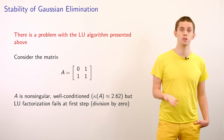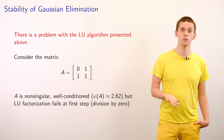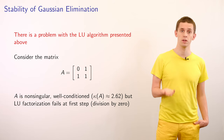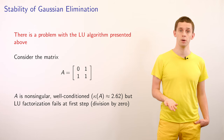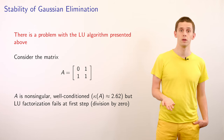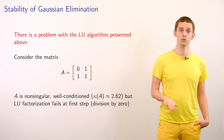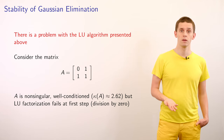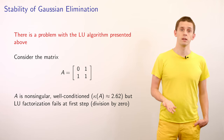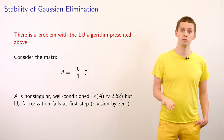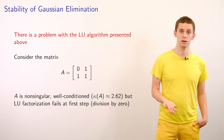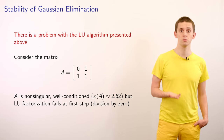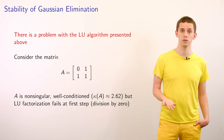In the previous video, we introduced the basic LU factorization, where we can take a square matrix A and express it as a product of a lower triangular matrix L multiplied by an upper triangular matrix U. We can use this LU factorization to efficiently solve linear systems. Unfortunately, the basic LU factorization presented thus far can fail for some simple well-behaved matrices.